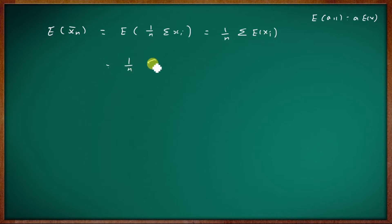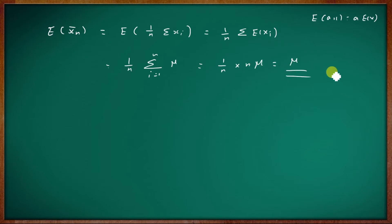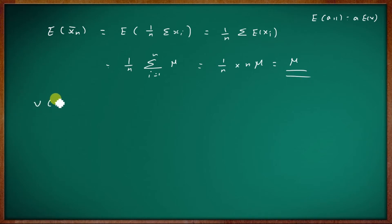Then E(x-bar-n) equals 1/n times summation i equal to 1 to n of E(xi). Here each E(xi) equals mu. Summing n times mu gives n times mu. Then 1/n times n mu equals mu. So E(x-bar-n) equals mu.